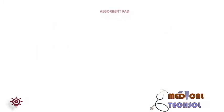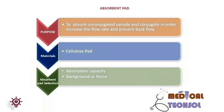The absorbent pad's function is to absorb unconjugated sample and conjugate in order to increase flow rate and prevent backflow. It also reduces background noise. The material used is cellulose, selected based on absorption capacity.